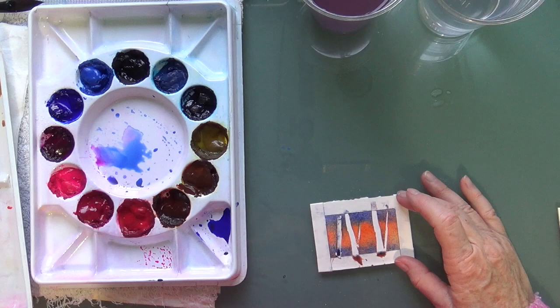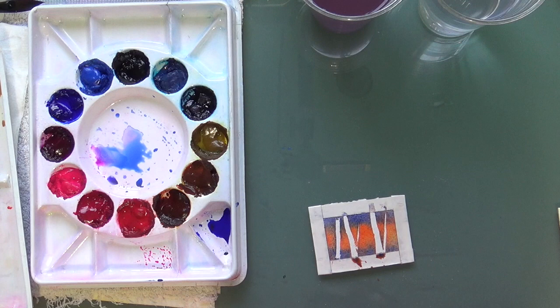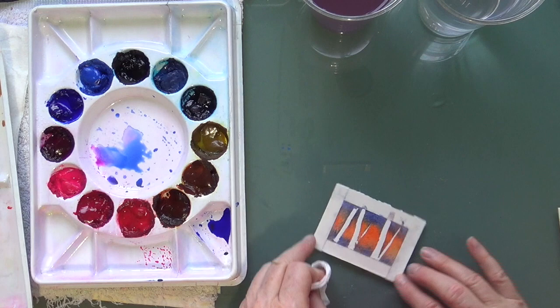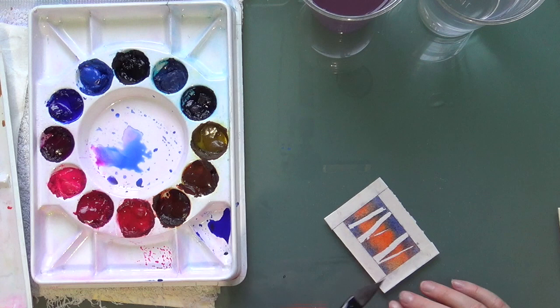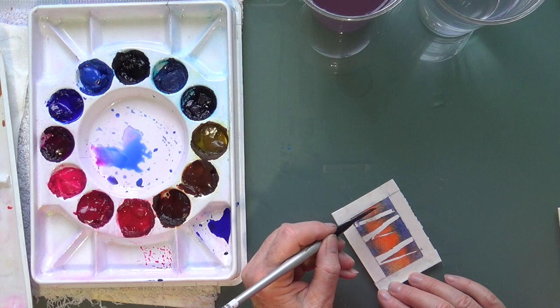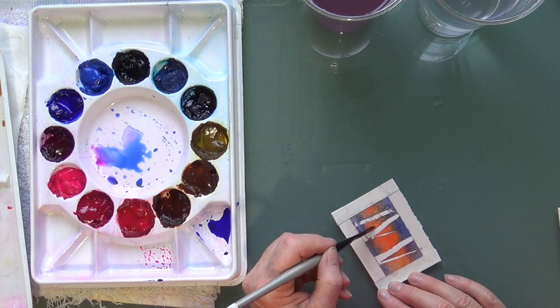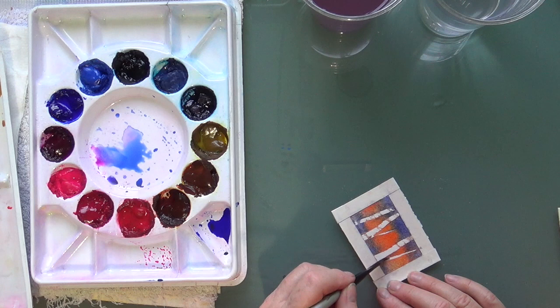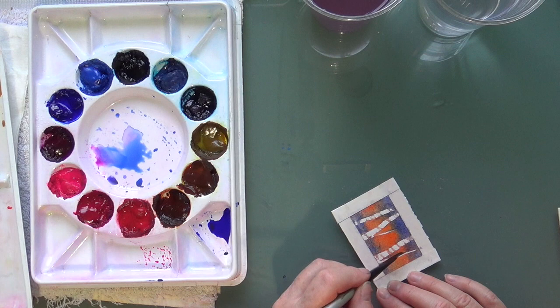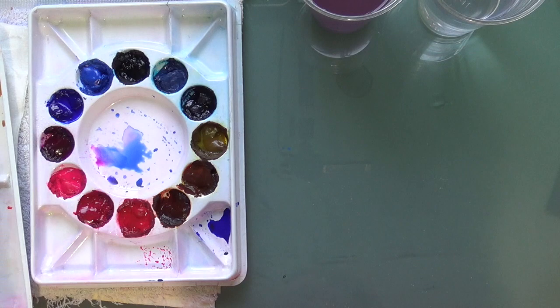You got to think quick on your feet and just have some fun with it. If it doesn't work out, it's just a little tiny piece of paper, it's only five minutes of your time. And hopefully you learn something. So I'm going to do exactly the same thing, just dragging the damp brush across so they look a little bit more natural. Still want to leave a bunch of the white showing.